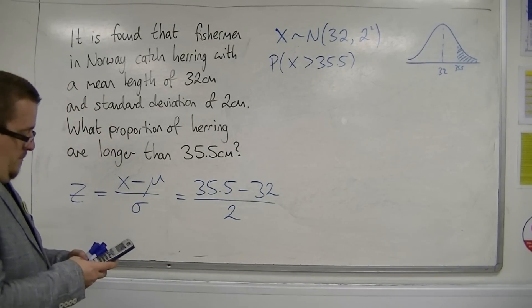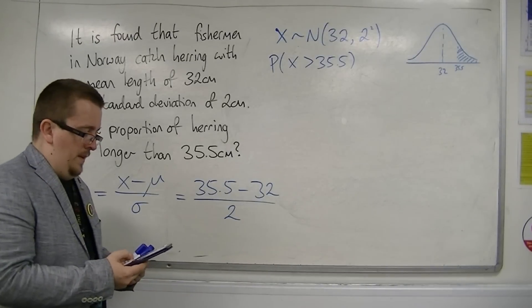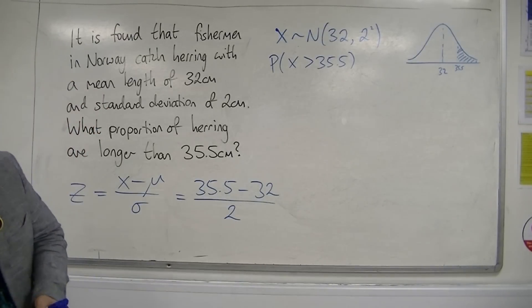So 35.5 take away 32, divide it by 2, and we get 7 quarters, or 1.75.